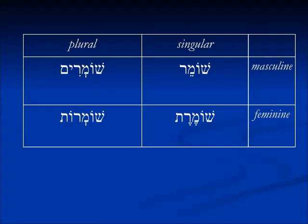For the feminine singular we see the cholem again and then two segols — shomeret. It's this vowel structure, the o plus the two segols, that define the feminine singular present tense pa'al verb. For the masculine plural we have the cholem, the shva under the mem, and then the chirik with the masculine ending im — shomrim. This is a present tense masculine plural participle. And for the feminine we see the ending ot — shomrot. You're probably familiar with these plural endings masculine im and feminine ot, and they apply also to the participle verbs.